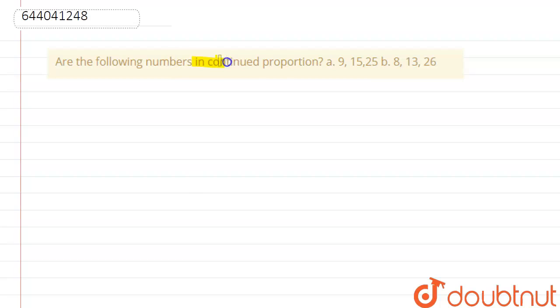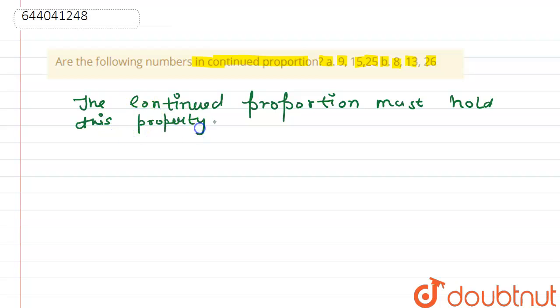Are the following numbers in continued proportion? (a) 9, 15, 25 and (b) 8, 13, 26. So here, first we must know the property of continued proportion. The continued proportion must hold this property.